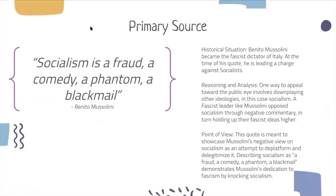Our first primary source is a quote by Benito Mussolini: 'Socialism is a fraud, a comedy, a phantom, a blackmail.' Historical situation: Mussolini became the fascist dictator of Italy, and at the time of this quote he was leading a charge against socialists. Reasoning and analysis: one way to appeal to the public eye involved downplaying other ideologies — in this case, socialism. A fascist leader like Mussolini opposed socialism through negative commentary, in turn holding up fascist ideas higher. Point of view: this quote showcases Mussolini's negative view on socialism by attempting to de-platform and delegitimize it, demonstrating his dedication to fascism by knocking down socialism.